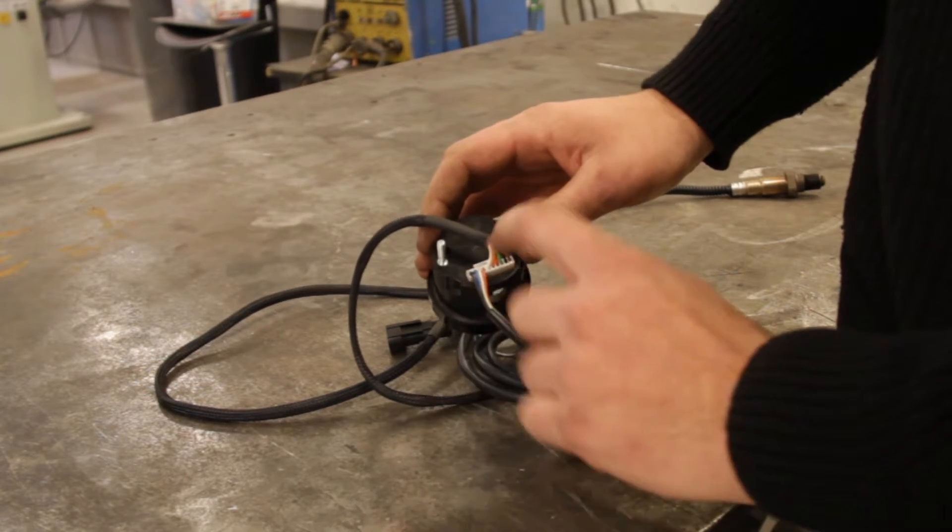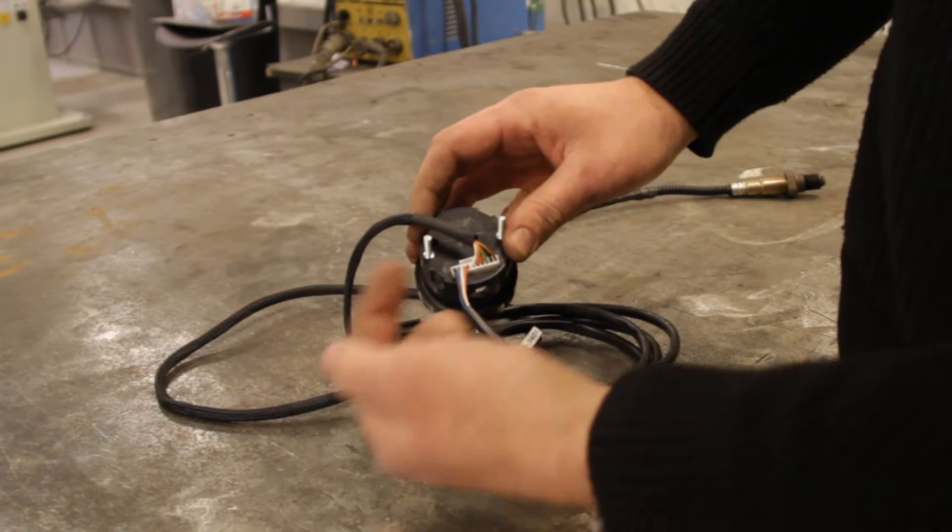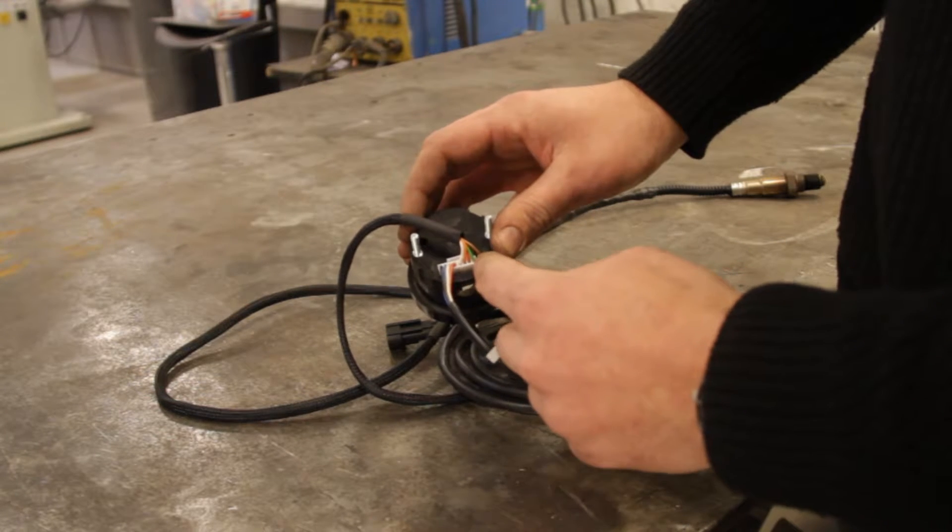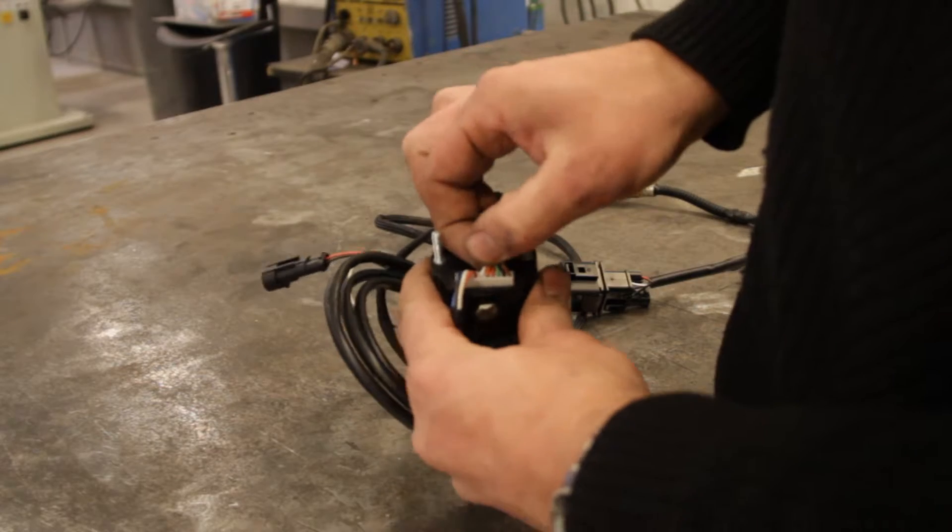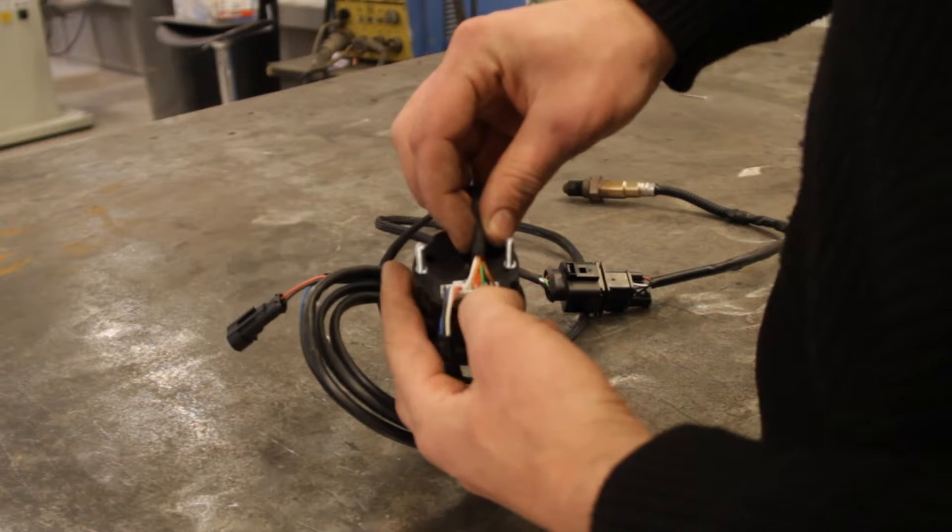They count the pins from the side going across this way, so obviously the six pin starts at number five, six, seven, eight, nine, ten. The white wire is your heater earth, the orange wire is your sensor voltage.